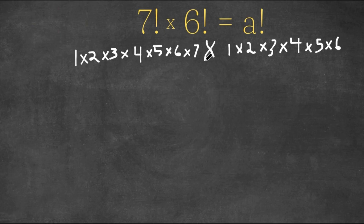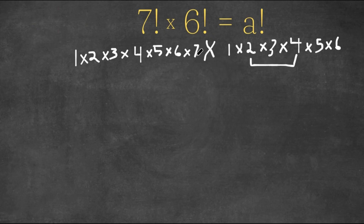So now what we're going to do is: 2 times 4 — these two — equal 8, and that's the next number of the sequence. So we have times 8.